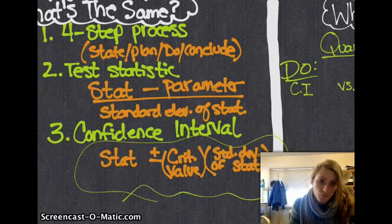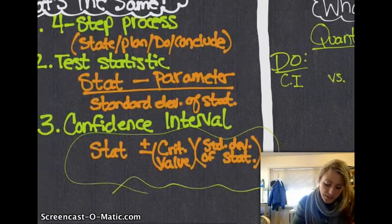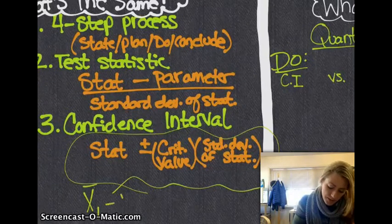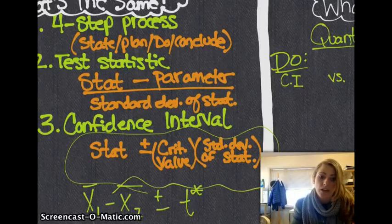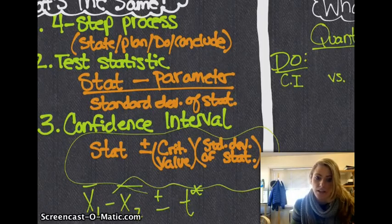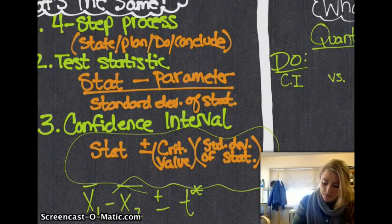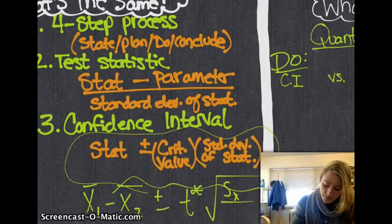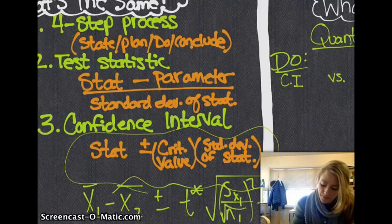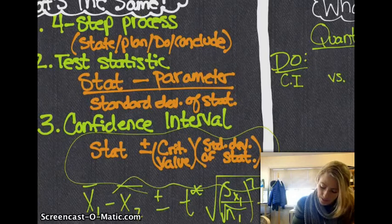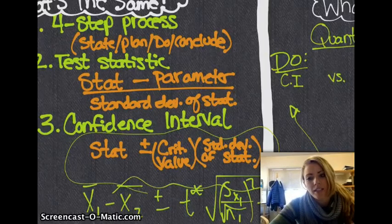And usually we don't know sigma, so we'll be using a t star. So your statistic is going to be x bar 1 minus x bar 2, and then plus or minus whatever your critical value is, t star, which we get from the degrees of freedom and the t table, and then the standard deviation of the statistic, which is that really ugly square root of standard deviation of the first one over square root of n1 squared plus the second one over n2 squared, and we get this nice fancy formula, which I will rewrite for you nicely on the right.